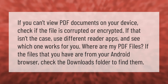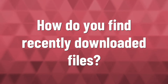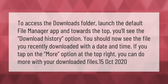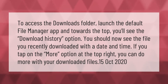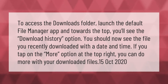If your PDF files are from your Android browser, check the Downloads folder to find them. To access the Downloads folder, launch the default File Manager app. Towards the top, you'll see the Download History option. You should see the file you recently downloaded with a date and time. Tap the More option at the top right to do more with your downloaded files.